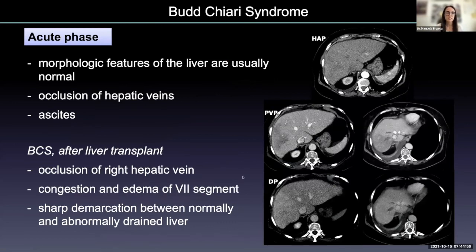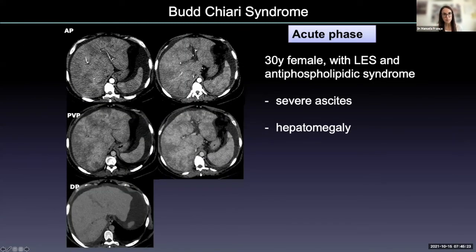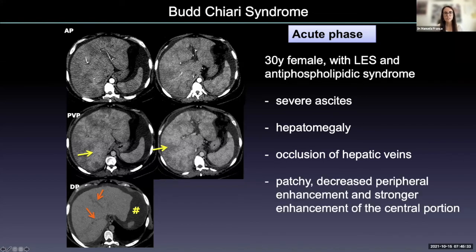In the acute phase, these patients may present normal morphological features of the liver, but we can detect occlusion of the hepatic veins and usually they have ascites. For example, we can see the occlusion of the right hepatic vein, congestion and edema of segment seven, and the sharp demarcation between the normally and abnormally drained liver. In another patient, we can see ascites and hepatomegaly, occlusion of the hepatic veins, and patchy decreased peripheral enhancement with stronger enhancement of the central portion of the liver.